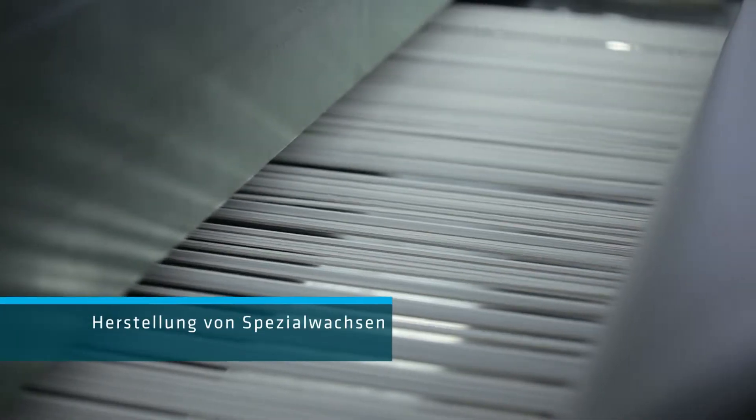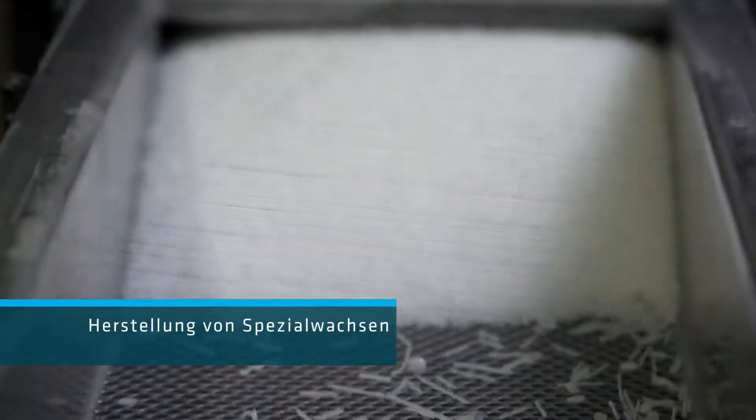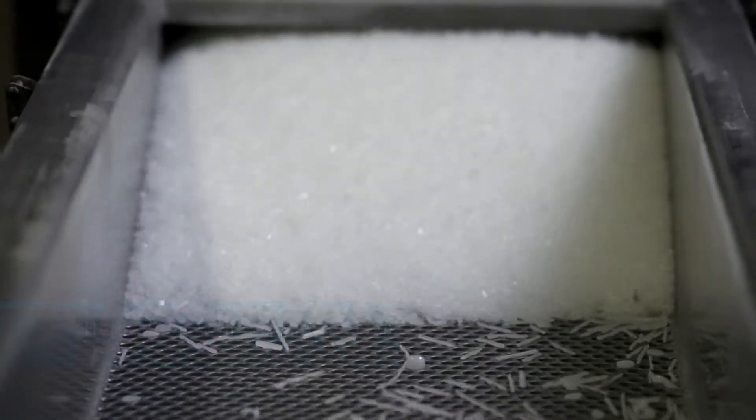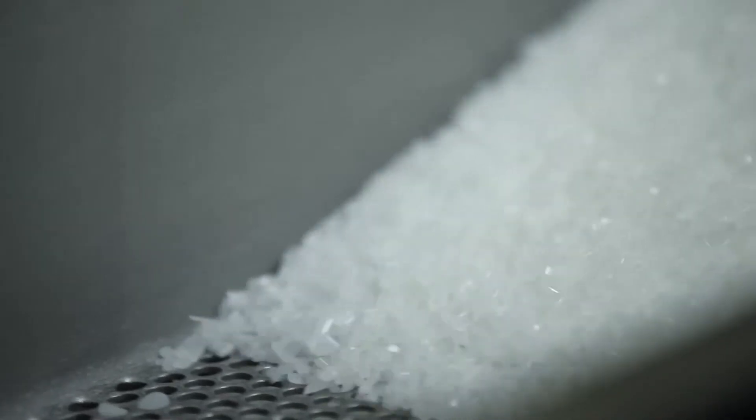Die Wachse werden in drei verschiedenen Konvektionierformen hergestellt: als Pulver, Granulat und als Flakes-Schuppen. Und diese drei anfallenden Formen werden von einer Stelle quasi palettiert.